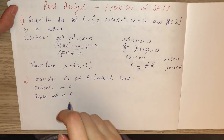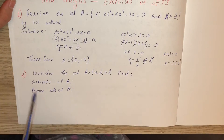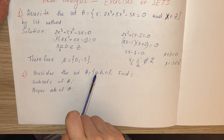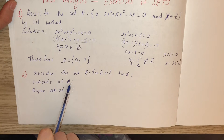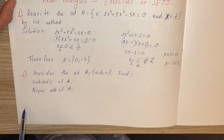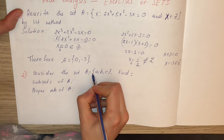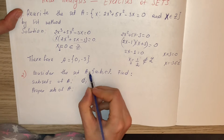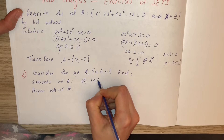Our second example is about subsets and proper sets. Consider the set A = {a, b, c}. We should find the subsets of A and the proper subsets of A. The subsets of A are: the empty set, A itself {a, b, c}.